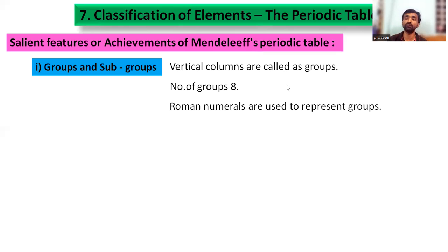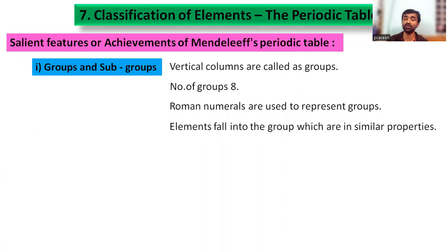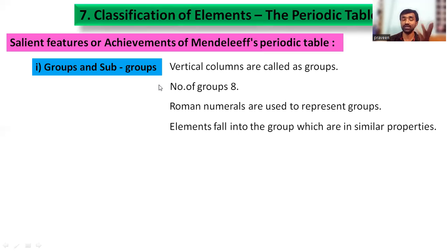Vertical columns are known as groups, with 8 groups assigned numbers 1 to 8 using Roman numerals, each subdivided into subgroups. The selection of elements into a group is based on similar properties — especially their reaction with oxygen and the general formula of the composition.